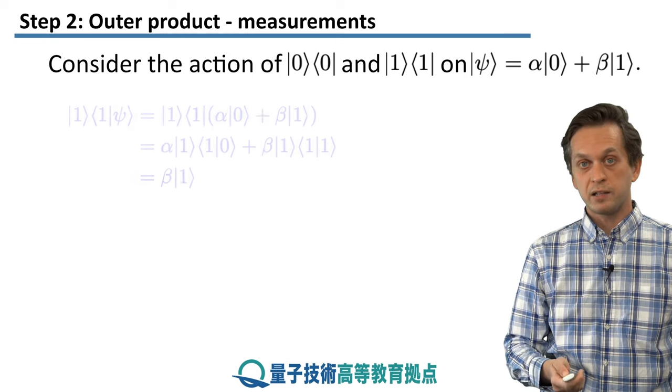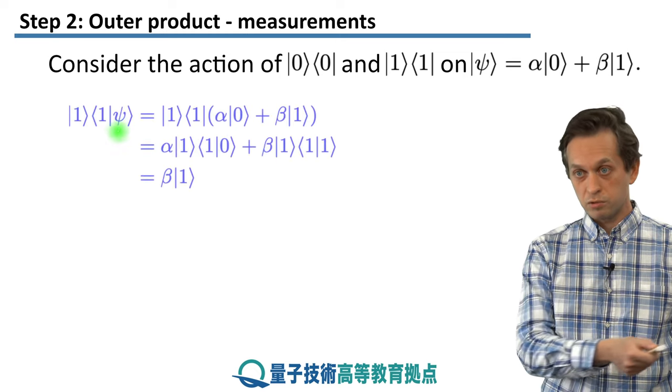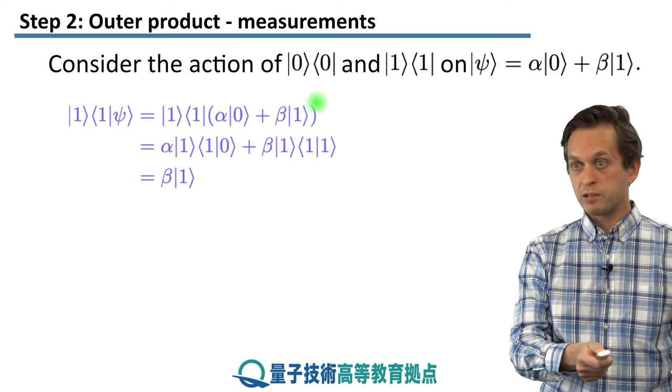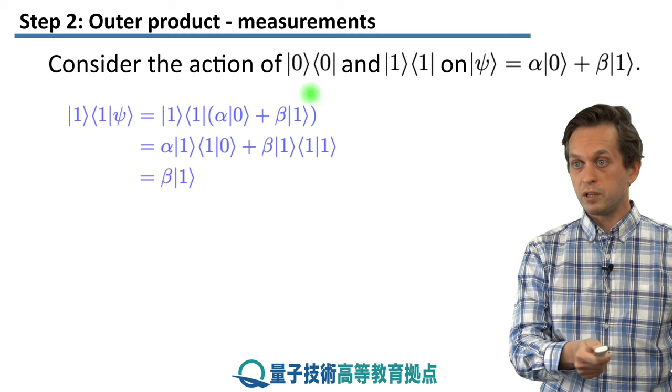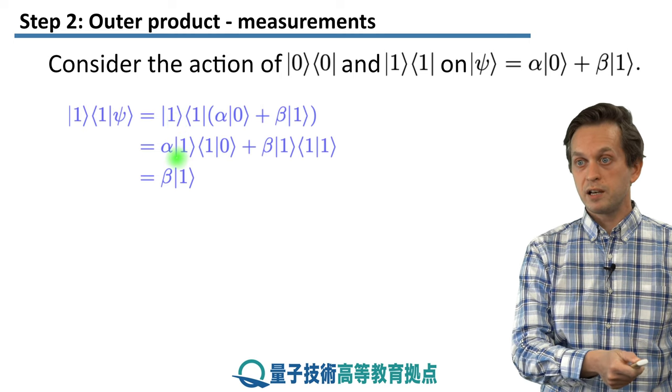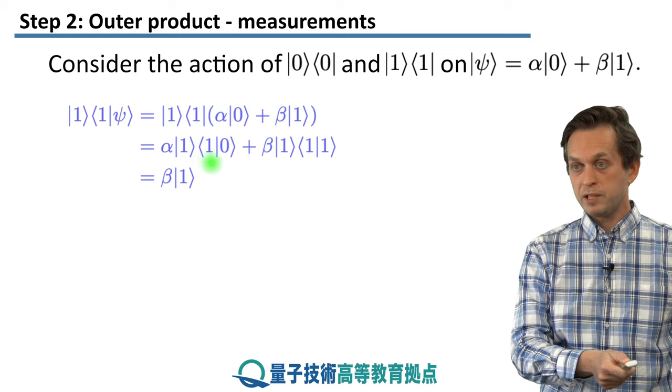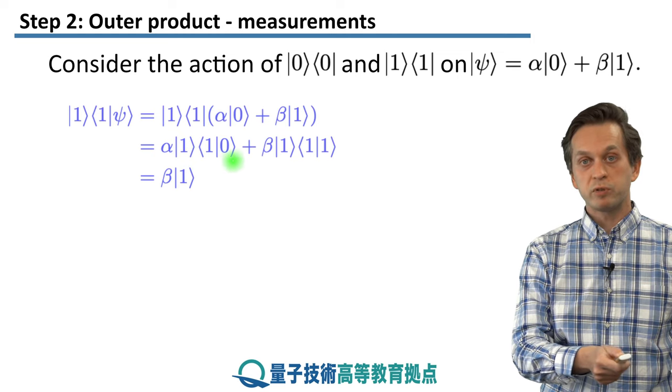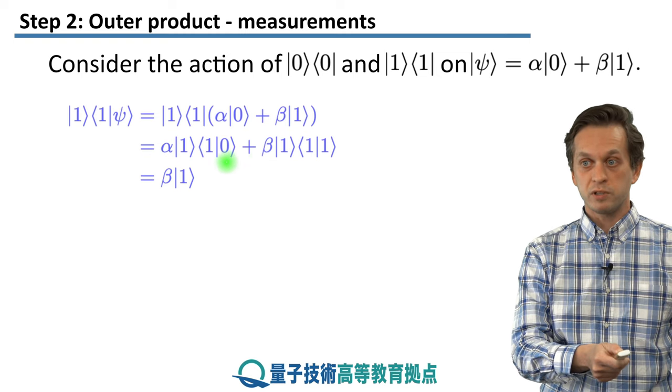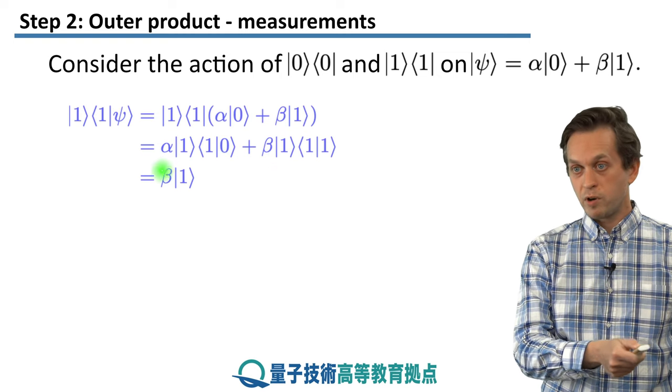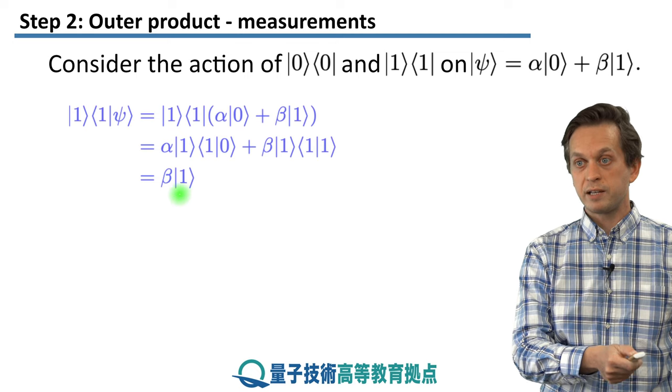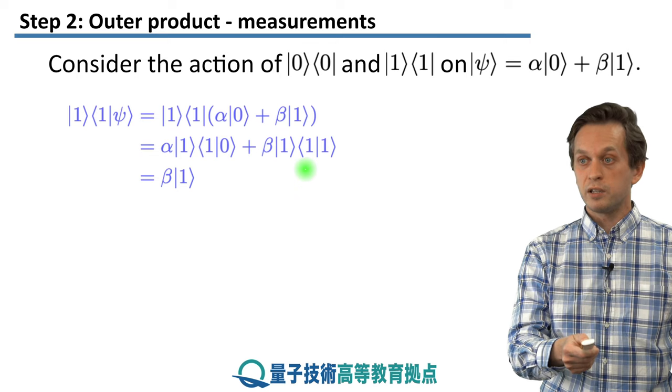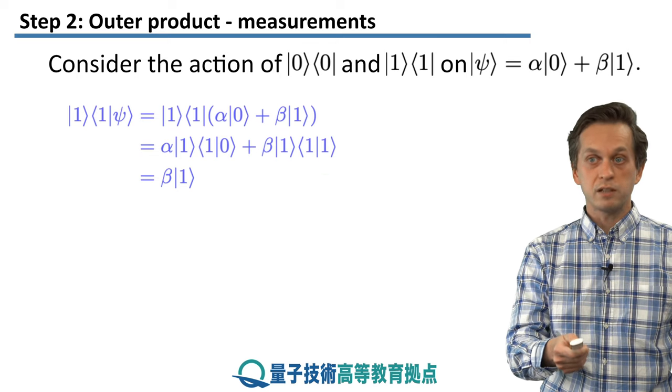Let's see what happens when we apply the outer product of 11 to our general state psi. Again, we write out the state psi, we multiply out the terms inside the brackets, and what we have is the following. But this time, we have alpha times ket of 1, times the inner product of 1 and 0, which we said was 0. Therefore, the whole expression simplifies to beta times 1. Again, I remind you that 1 is a normalized vector. Therefore, the inner product of 1 and 1 is equal to 1.